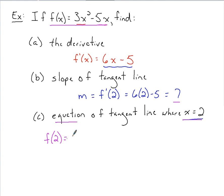So our y-value is going to be equal to f of 2. f of 2 is going to equal 3 times 2 squared minus 5 times 2. We calculate that out, we've got 12 minus 10, so f of 2 is going to be 2. So we know our point, x is 2, y is 2, slope of 7, meaning the equation of the tangent line is going to be y minus 2 equals 7 times x minus 2.